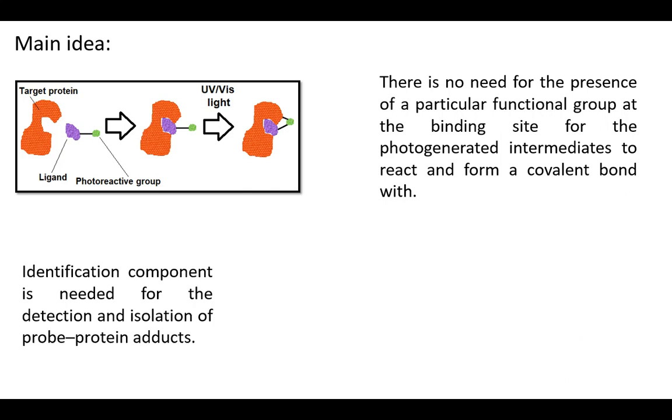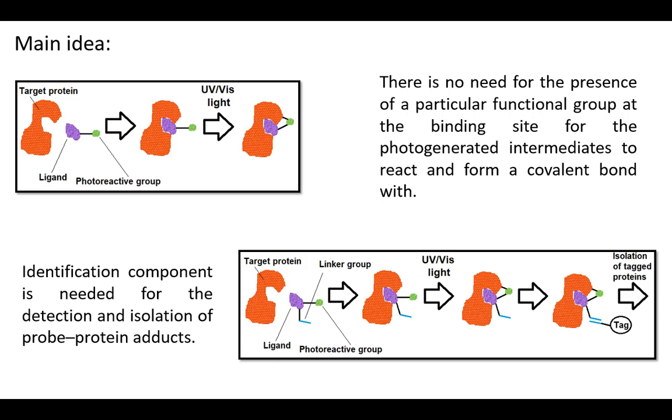An identification component is needed for the detection and isolation of probe protein adducts. You can use a fluorescent dye, a radioisotope, or a partner for a specific binding event.